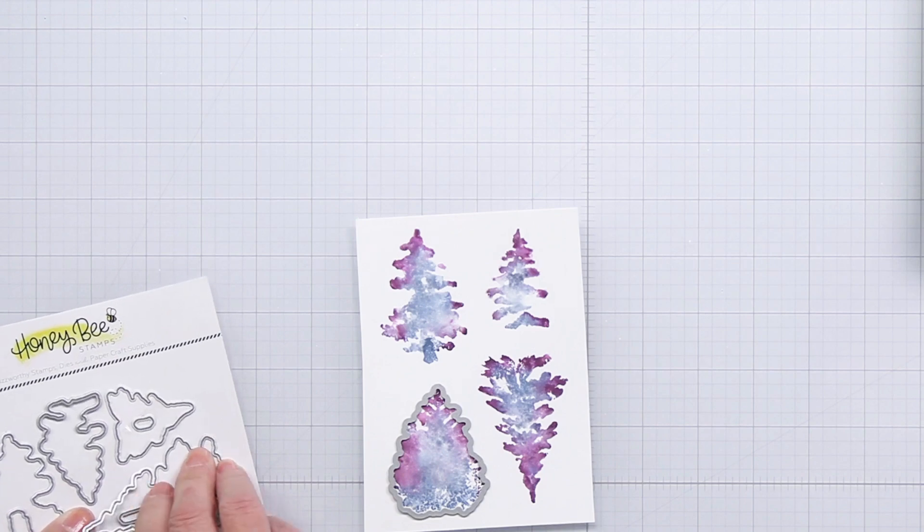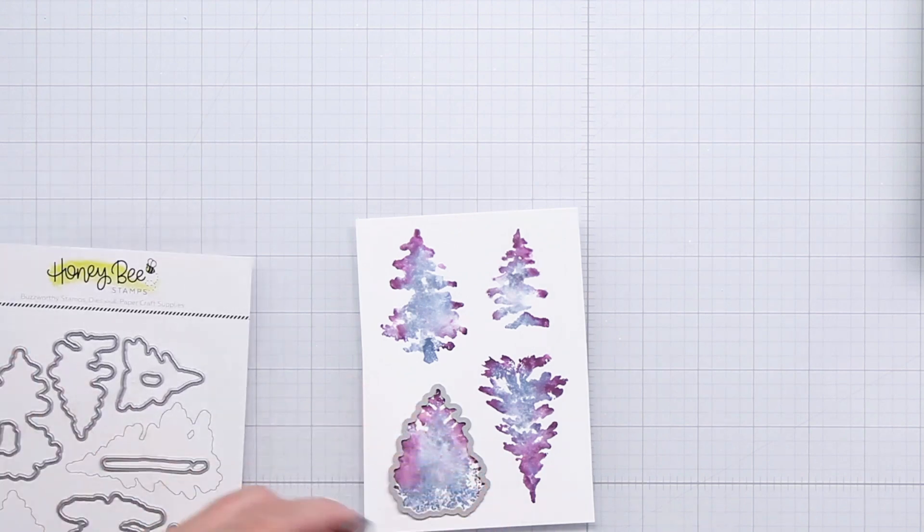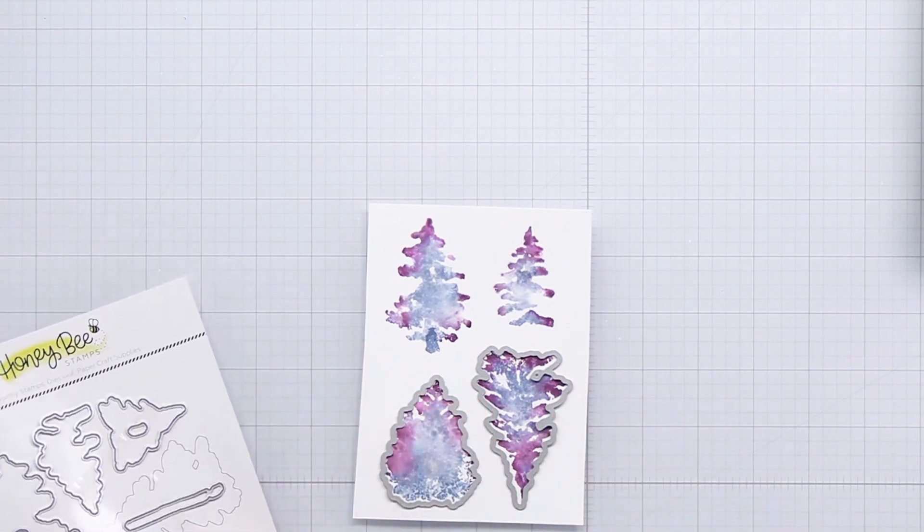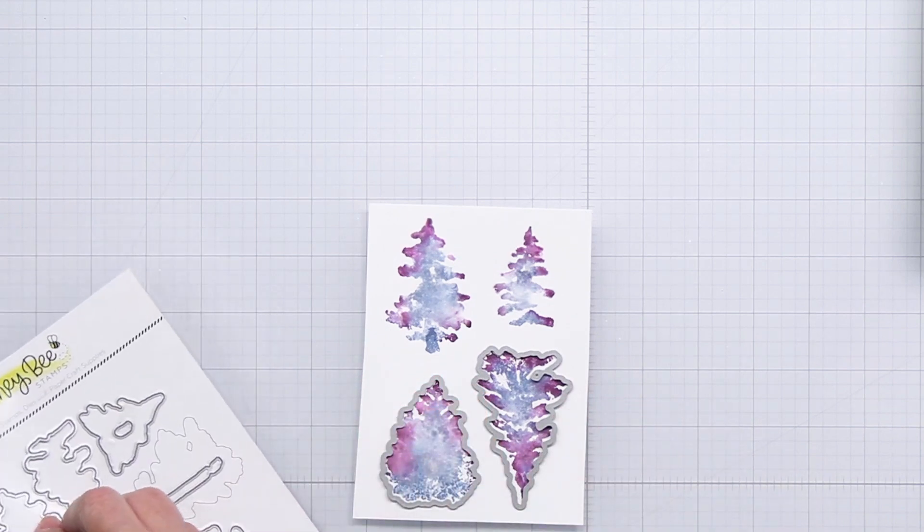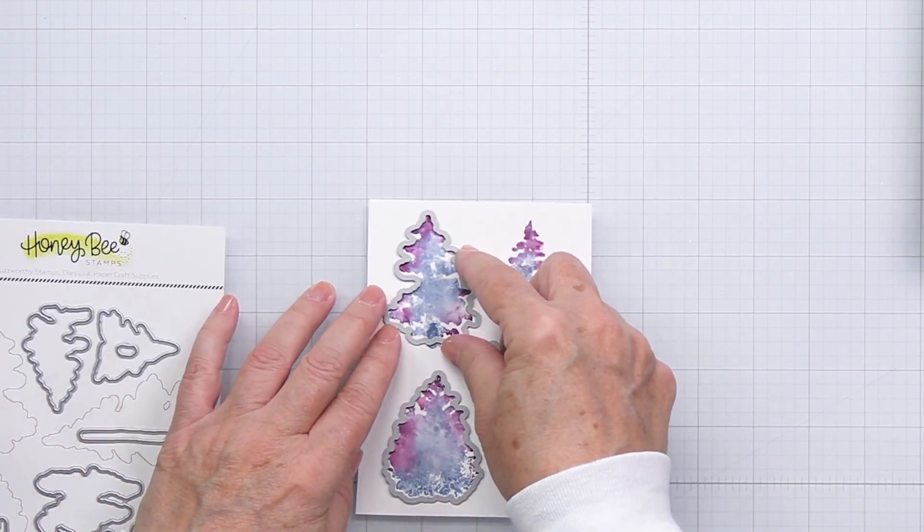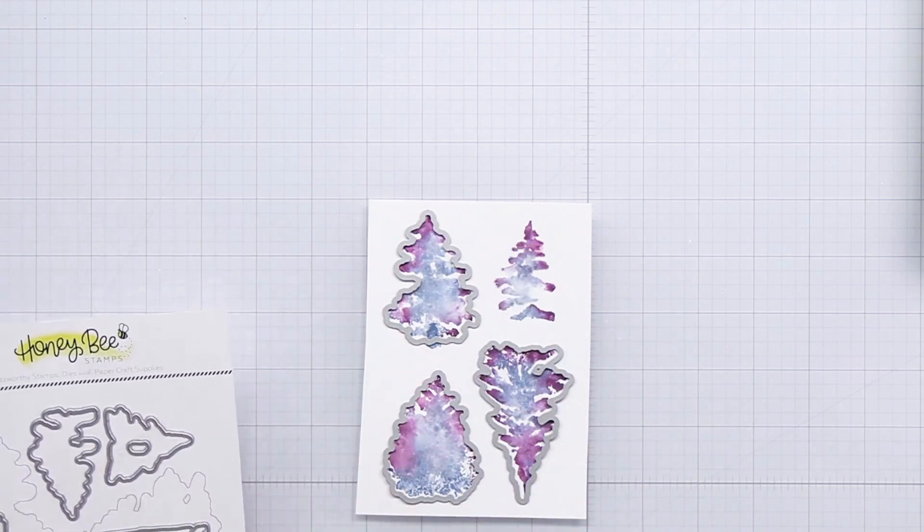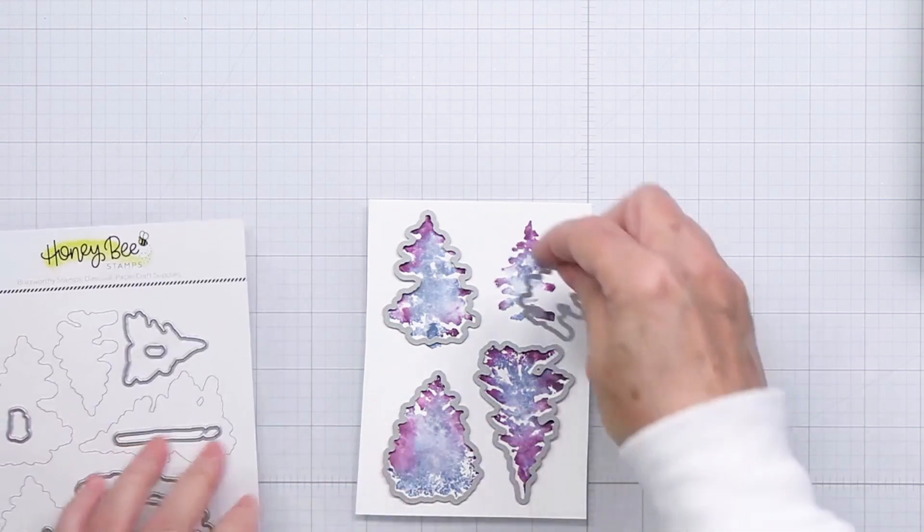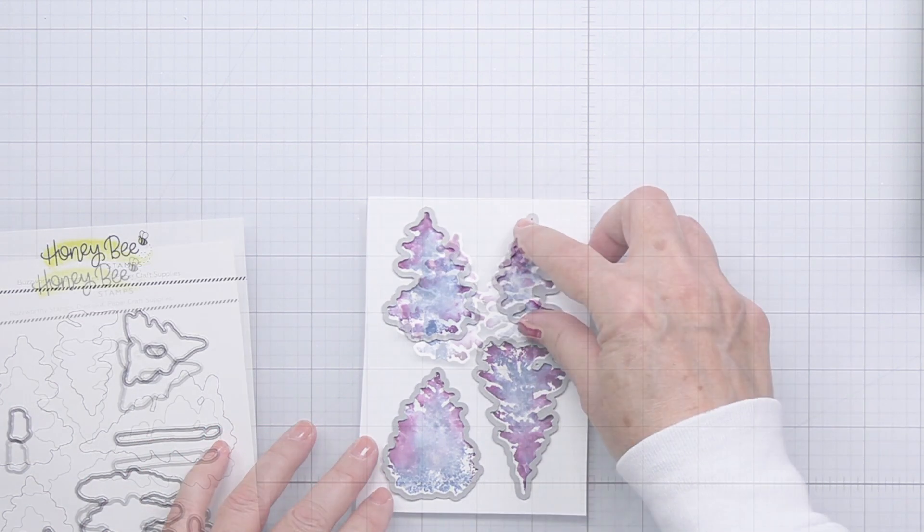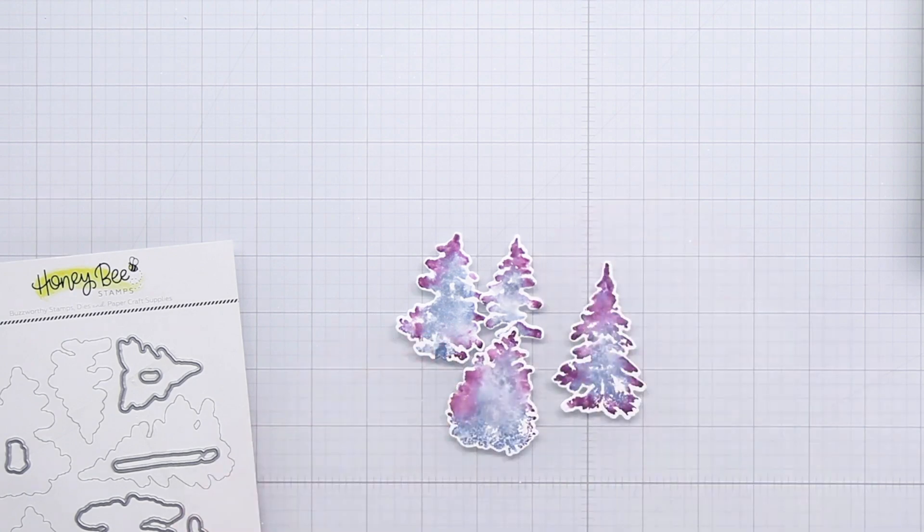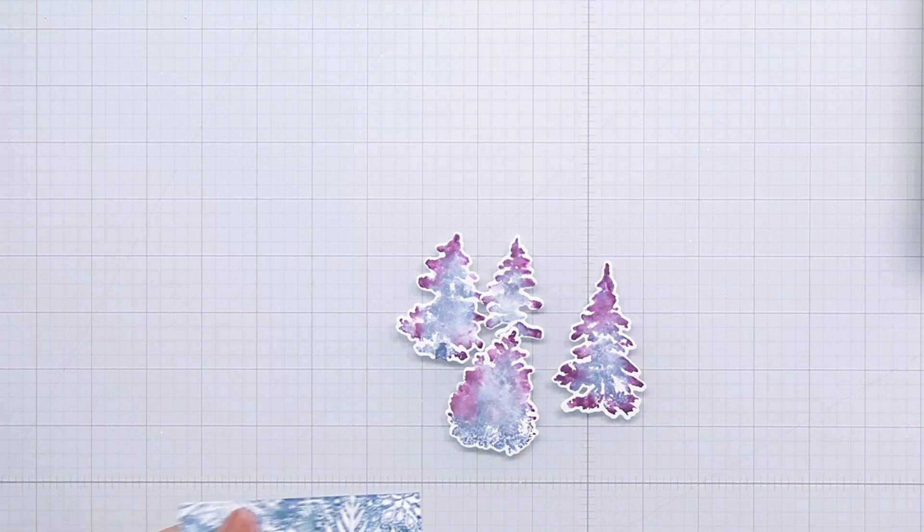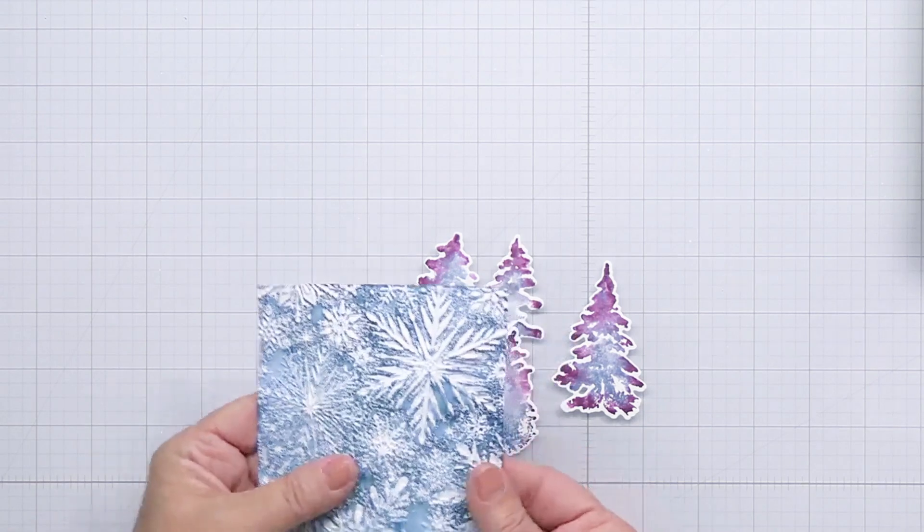I took a second to dry that with my heat tool. Now I'll take the coordinating die set for the watercolor pines and grab the matching die for each of these different stamps that I've stamped out. I'll tape those down to the paper in place and die cut those out with my die cutting machine. There are more trees than what I have stamped here in the set, but I just wanted four for my little card. You can see how they're all die cut—I love that white edge, it actually looks like snow and that's going to be perfect for my project.